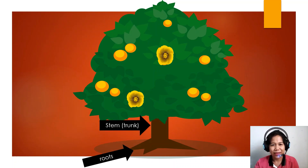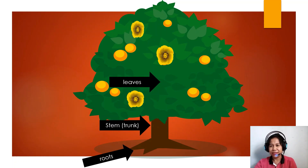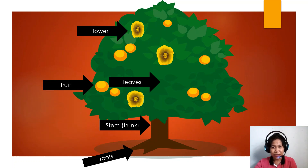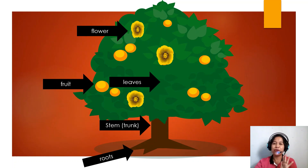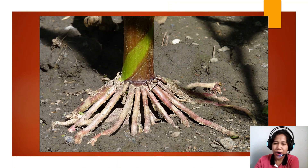Roots, stem or the trunk, the leaves, the flower, the fruit. Those are the five major parts of the flowering plant. Let's take a closer look at the roots.